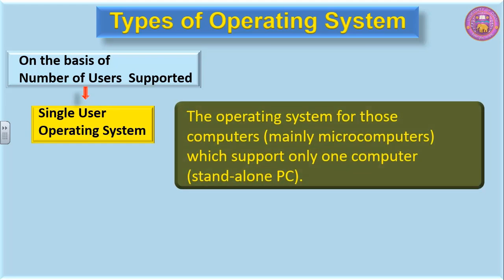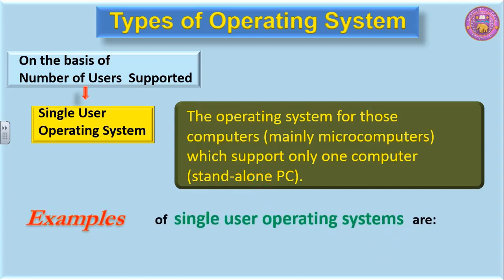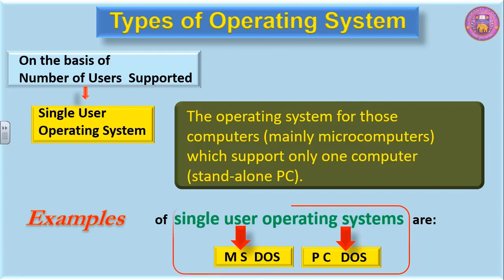The single-user operating system is for those computers — mainly microcomputers — which support only one user, and that is a standalone PC: a PC which is not connected to any other computer. Examples of single-user operating systems are MS-DOS and PC-DOS. MS-DOS is from Microsoft and PC-DOS is from IBM — Personal Computer Disk Operating System.